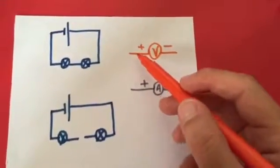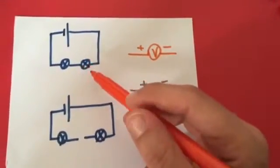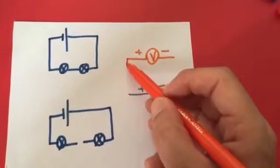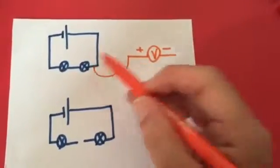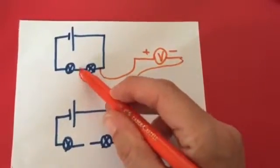Question number one is, how do we connect a voltmeter to be able to measure the voltage across one of the bulbs? Since the voltmeter should be connected in parallel, all you have to do is just connect your voltmeter across your bulb.